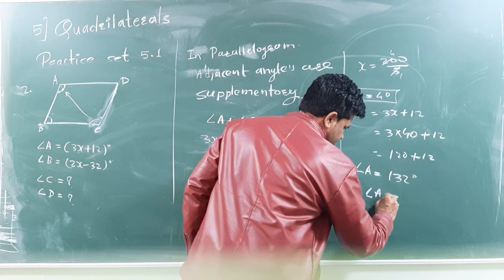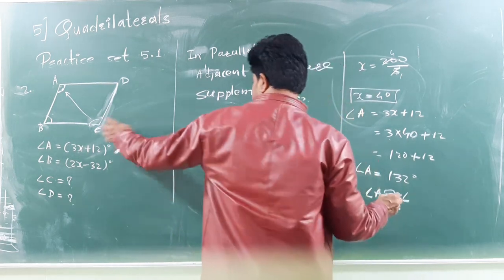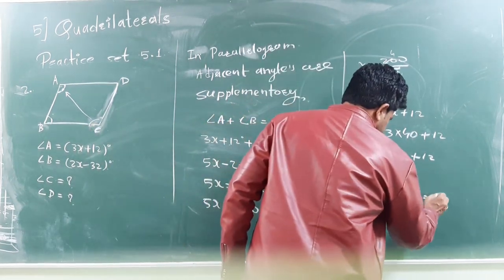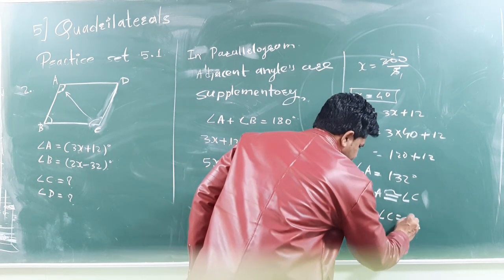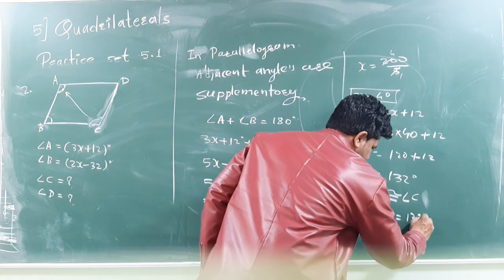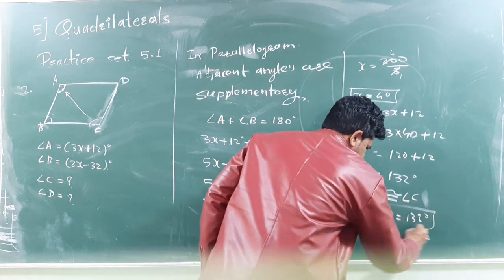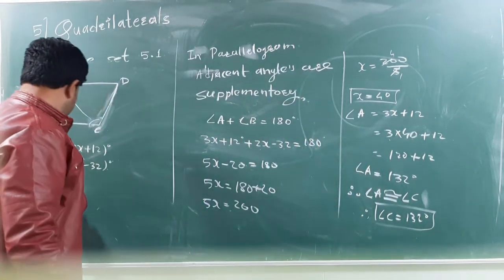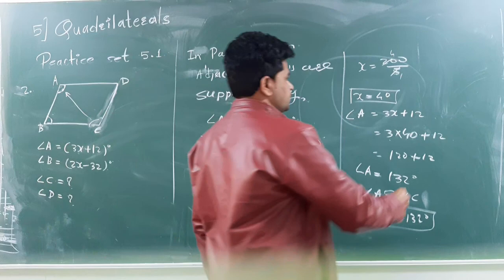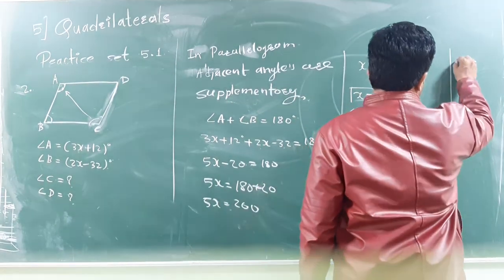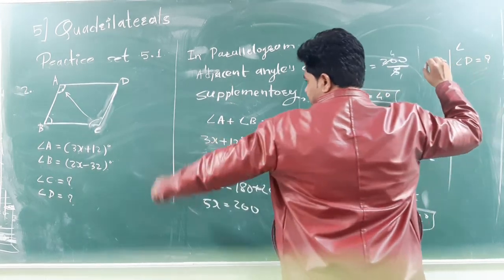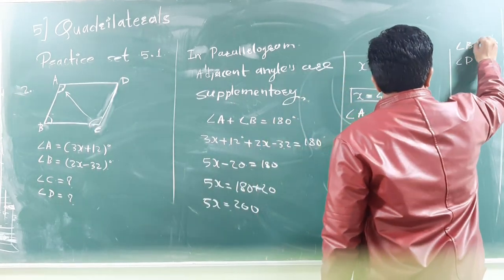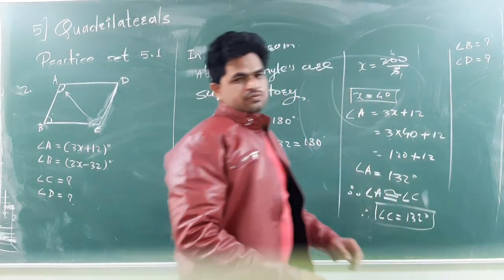And, therefore, the angle A is congruent to angle C. That's why, angle C is also 132 degree. You see, first C, and then, remaining angle D, you can measure here. So, find angle D by measuring angle B. So, solve this. It's on you. Thank you.